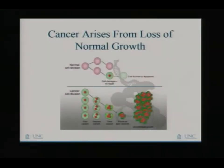How does cancer occur? It arises from loss of normal growth. There's a multi-step process that happens when cancer develops, and it becomes this uncontrolled growth that your body just can't figure out what to do with.